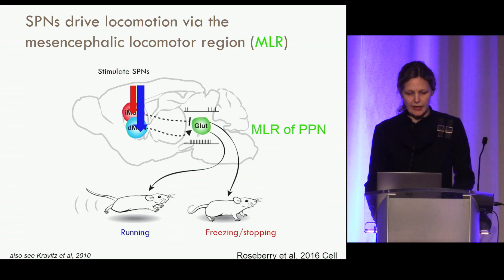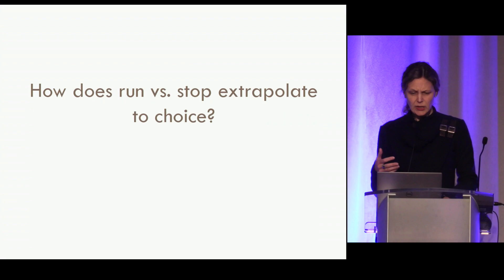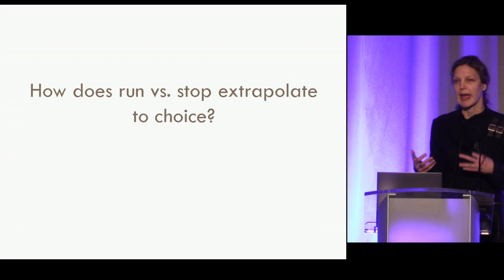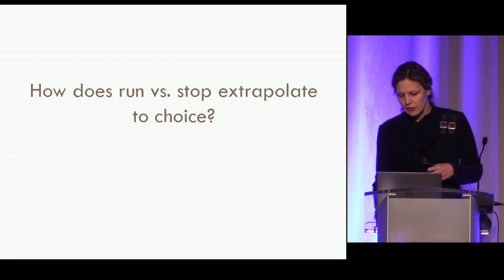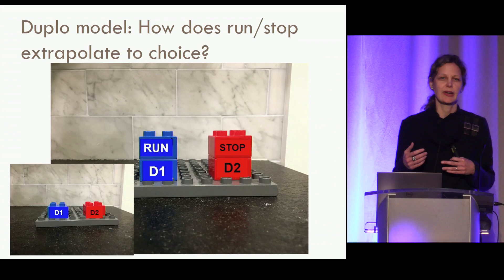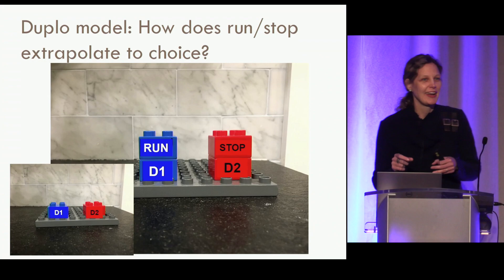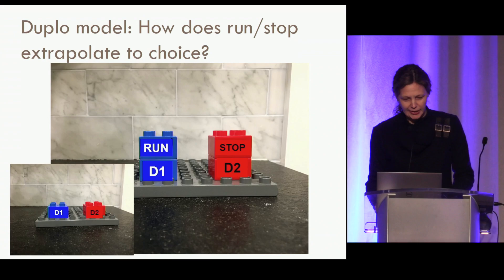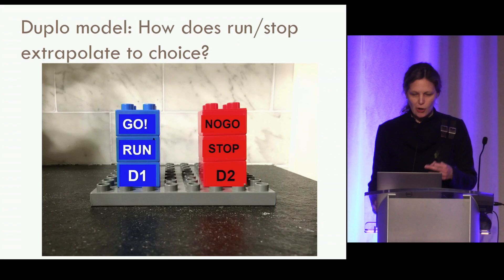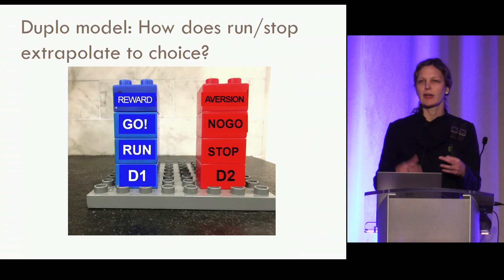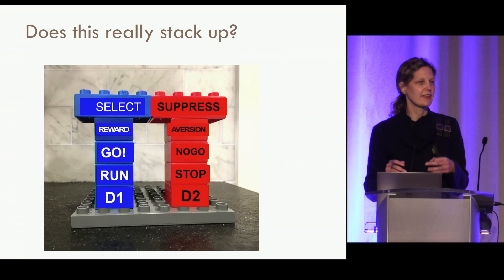Moving from that gross insight, the question is how do we extrapolate to understand how these pathways contribute to choice? Striatal neurons are active in the hundreds of milliseconds before an animal makes a choice. Does activity work the same way in driving choice as it does in driving running and stopping? I call this the 'Duplo model' — Duplos are the starter Lego, easier to manipulate — because we're in early days of understanding cell-type specificity. In this Duplo model, we stack dichotomies: run and stop, D1 and D2, 'go' and 'no-go' pathways, with biases toward reward or aversion.